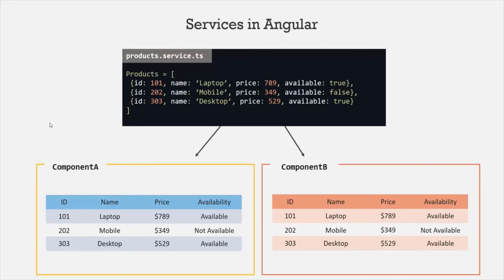Also, as we learned at the beginning of this lecture, the component must focus on presenting the data to the user, and the task of providing data to all the components must be delegated to the service class. This is why it is called a service — because it provides the service of providing data to every component that needs it.